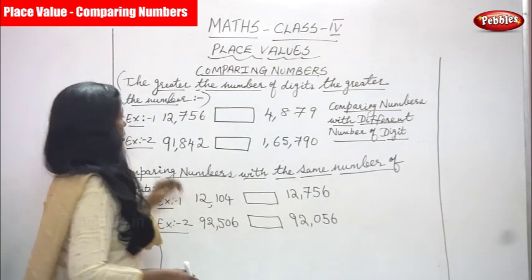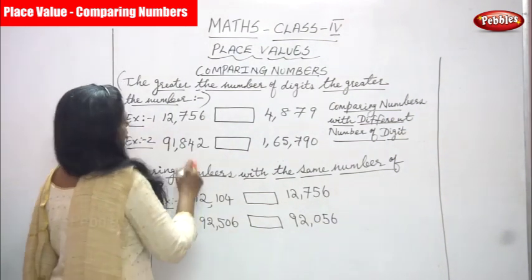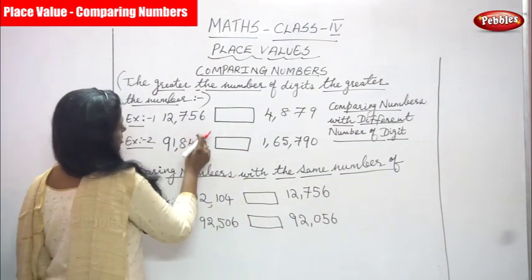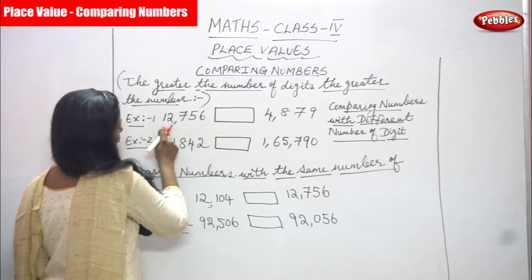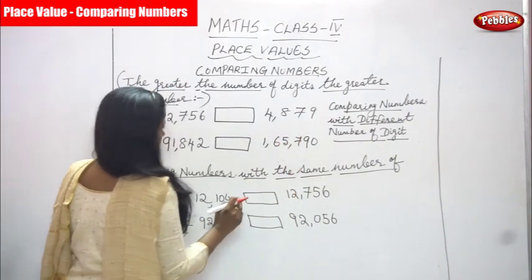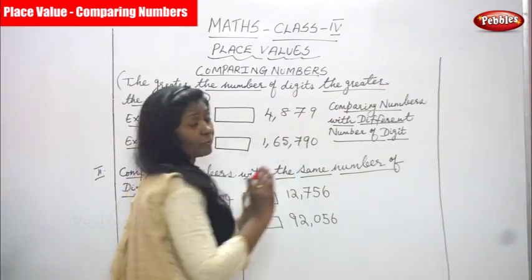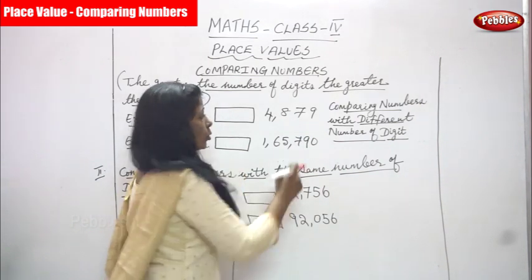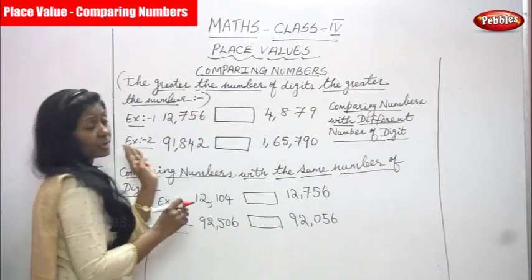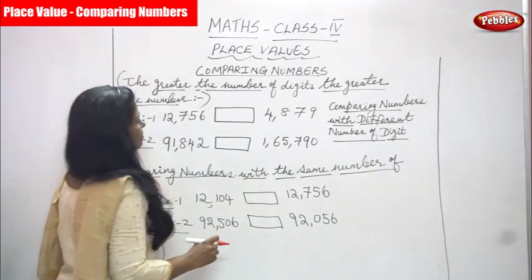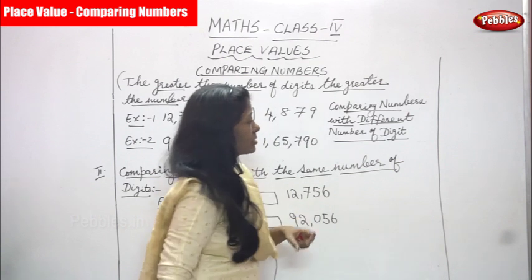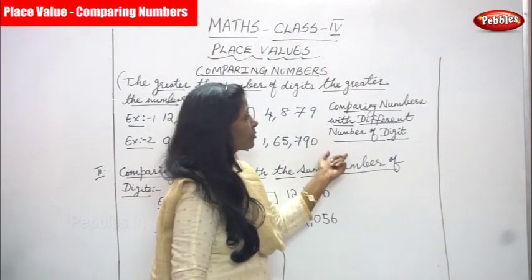For example one, we are going to see 12,756. First you have to count the digits: one, two, three, four, five. Here one, two, three, four — so here four digits. That means this is the left side and this is the right side. You have to compare both side numbers. The right side has four digits but the left side has five digits, so the five-digit number is greater. You have to put the greater sign here.